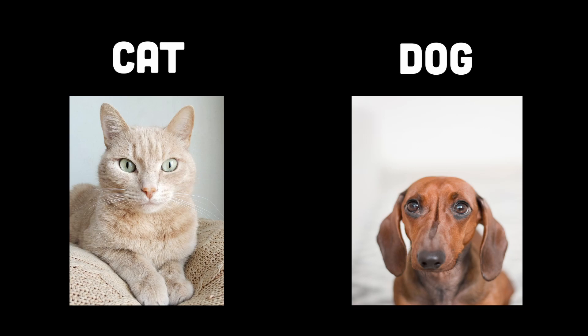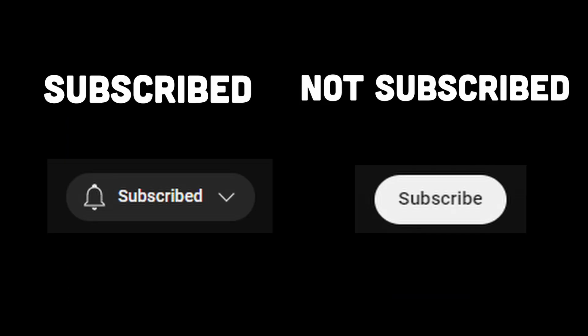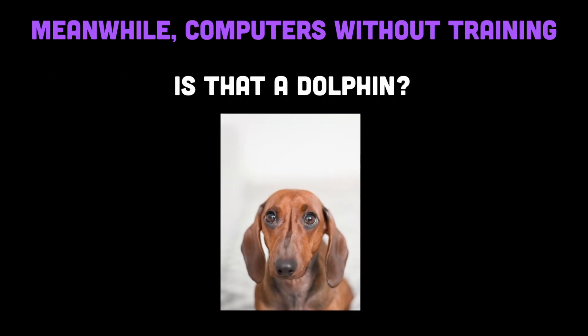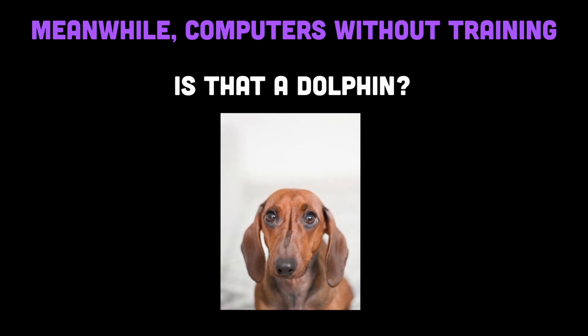Neural networks can help traditional computers make intelligent decisions with limited human assistance. For example, humans are extremely good at detecting or classifying images — a human would have no problem distinguishing what is subscribed and not subscribed on YouTube. On the other hand, a traditional computer isn't as good at distinguishing images.